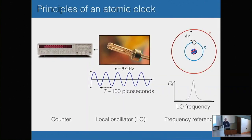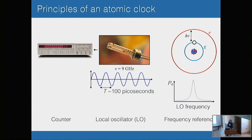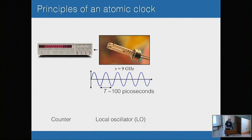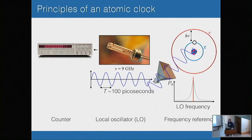So, principles of an atomic clock — that's really basic, I think everyone in the audience already knows this. But you have your local oscillator, which for rubidium or cesium clocks is a microwave oscillator, a quartz tuning fork. The issue is that it's drifting around with respect to your definition of the second, so you reference it to a transition in an atom.